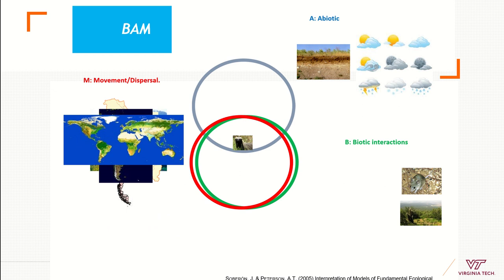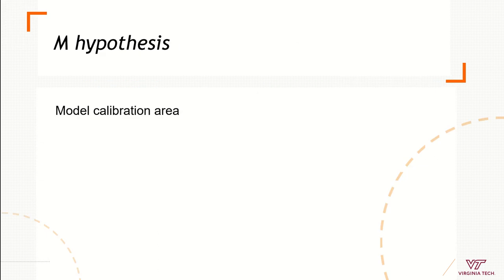We need to understand if it's a global model or a country level model. We need to have that clear based on the biology of my species. In the area where those variables intersect is where we are going to have the presence of these species. Generally we are assuming that these species can have the biotic interactions everywhere where these species is able to disperse. This dispersal area we call the model calibration area in ecological niche modeling, and this is our best hypothesis of where these species could occur.